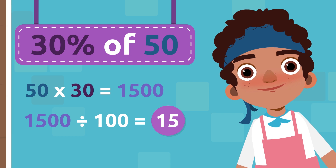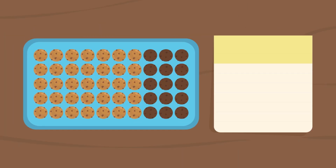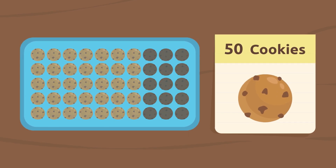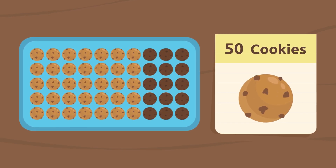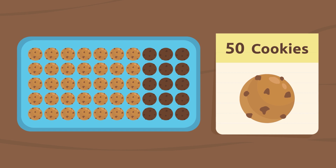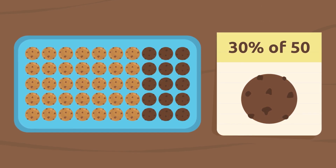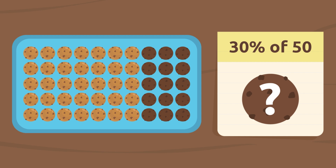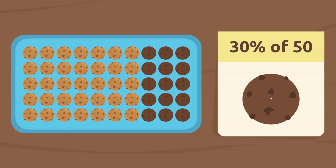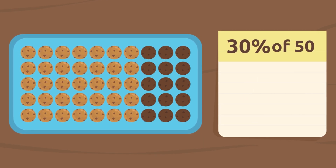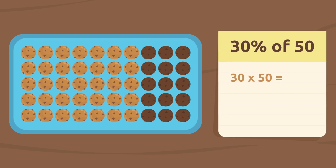Oopsie! What bad luck — I had to bake 50 cookies, but got distracted explaining percentages and 30% of my cookies got burned. How many cookies actually got burned? To find out, first we should multiply 30 by 50. This equals 1500.